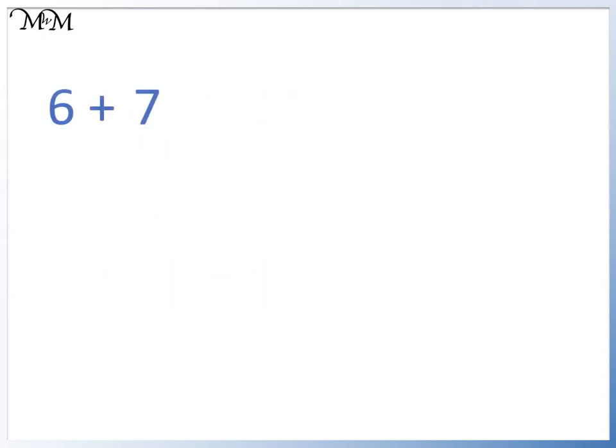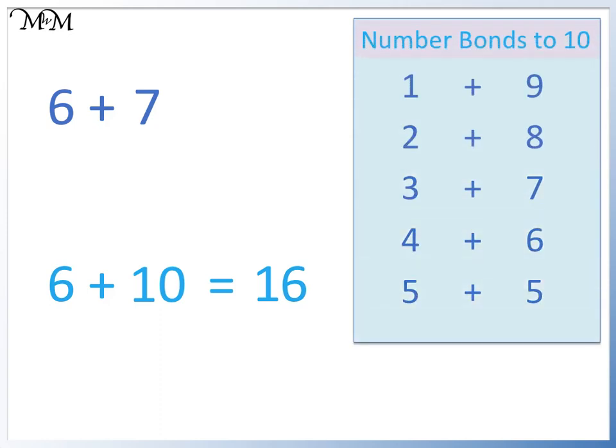6 plus 7. We first look at 6 plus 10, which equals 16. From our number bonds to 10, 7 is 3 less than 10. We subtract 3 to get our answer. 6 plus 7 equals 13.